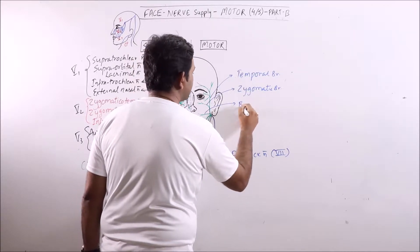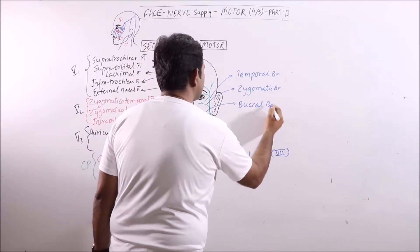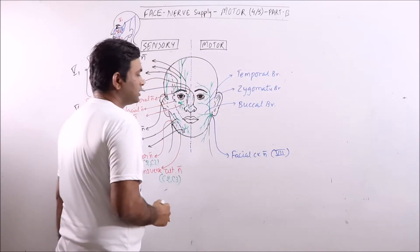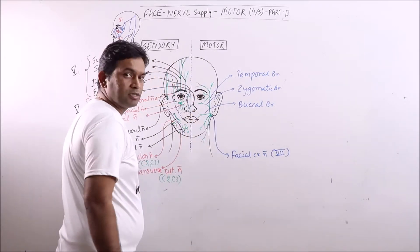This is buccal branch. Buccal branch supplies the upper lip and muscles of the cheek.